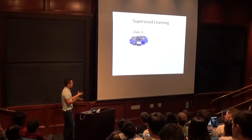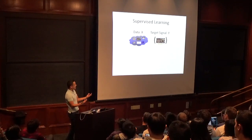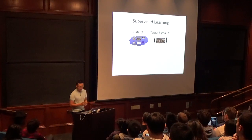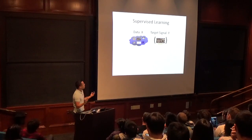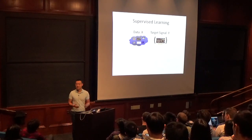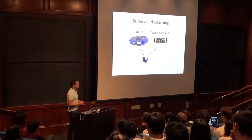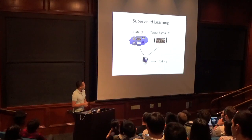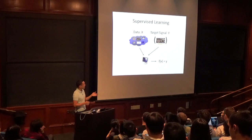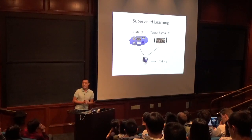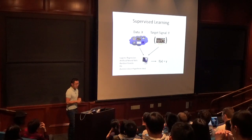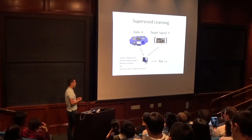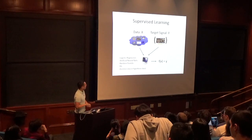In a supervised learning pipeline: you get dataset X — say, movies on Amazon — and target signal Y, say the average rating. Given some attributes of a movie, the goal is to predict the rating. You feed X, Y pairs into a machine learning algorithm, which outputs an F that accurately predicts Y for any X in the training set. Methods include deep learning, artificial neural nets, and classical methods like logistic regression.